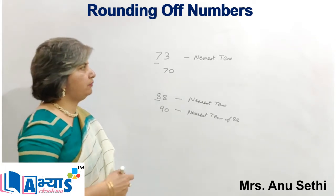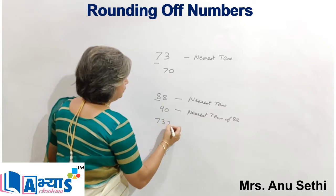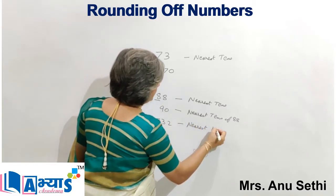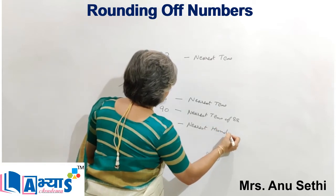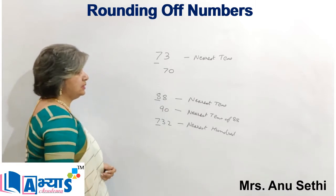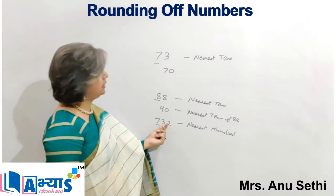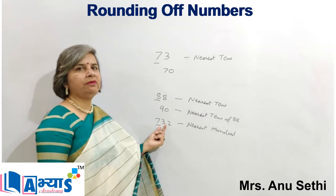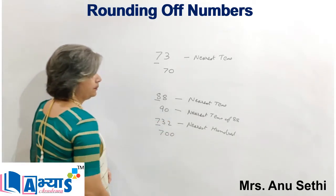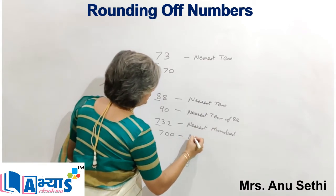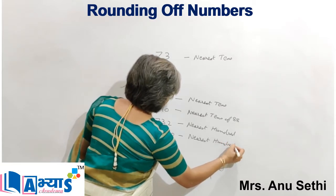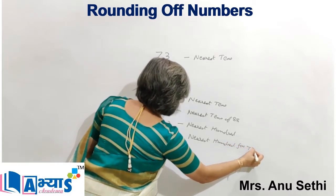For example, if I have the number 732 and I am rounding it to the nearest hundred, I will take the hundreds position as it is and check the tens position. As I have 3, which is less than 5, the nearest hundred will be 700. So 700 is the nearest hundred for 732.